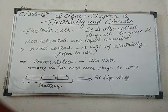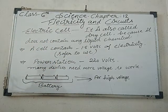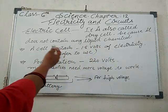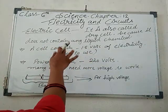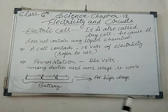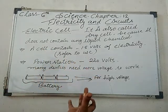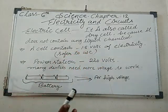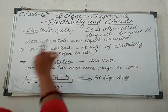Dear students, now we learn about the electric cell. Electric cell is also known as a dry cell. Why is it known as a dry cell? Because it doesn't contain any liquid chemical. All the chemicals present inside the cell are in powdered form. A single cell contains only 1.5 volts of electricity, that's why it is much easier and safer to use.